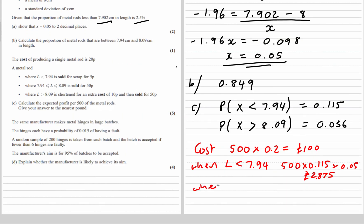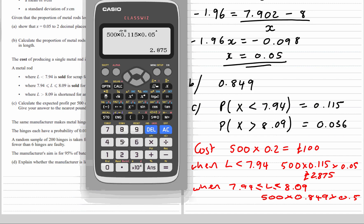When it's between 7.94 and 8.09, so 500 times 0.849, and that's sold for 50p each. So 500 times 0.849 times 50p. 212 pounds 25.